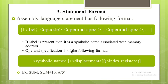The operand specification has the following format: you specify the symbolic name, optionally a displacement, or optionally an index register. For example, the first form specifies a symbolic name like sum; the second uses a displacement; and the third uses an index register.